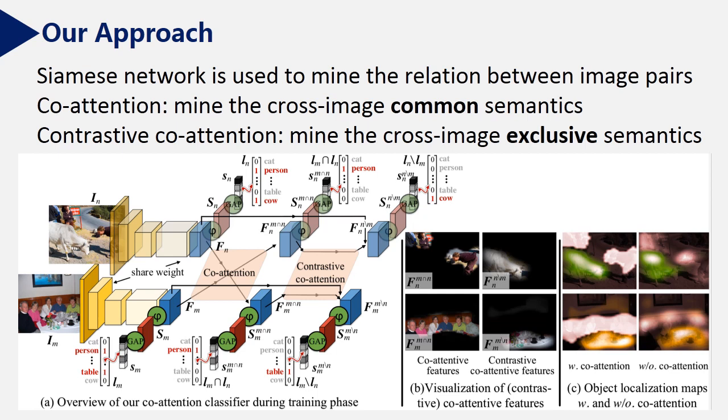This slide explains our approach. In the left, it shows our co-attention classifier. In the right, it shows the visualization of localization maps. The Siamese network is used to mine the relation between image pairs. Co-attention or contrastive co-attention are used to mine cross-image common or exclusive semantics.